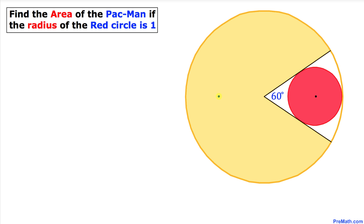Welcome to pre-math. In this video tutorial, this pac-man is trying to gobble up this red dot. The jaw of this pac-man is opened at 60 degrees, and the radius of this red dot is one. Now we are going to calculate the area of this yellow pac-man.